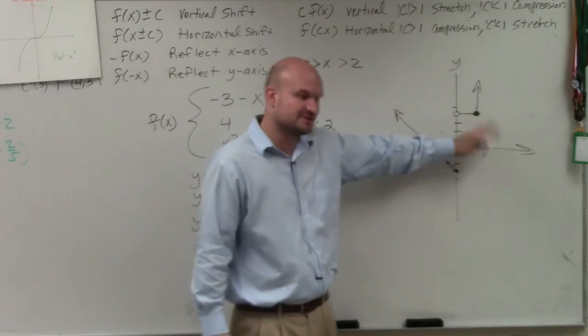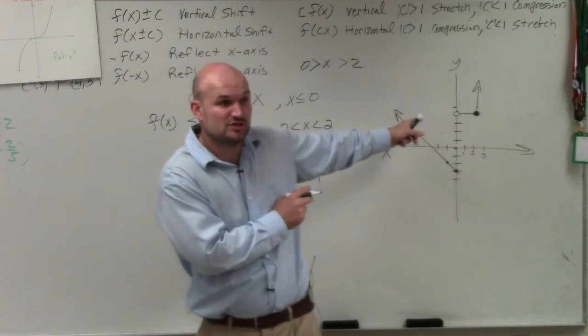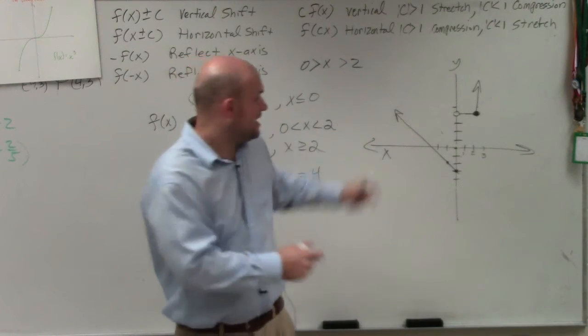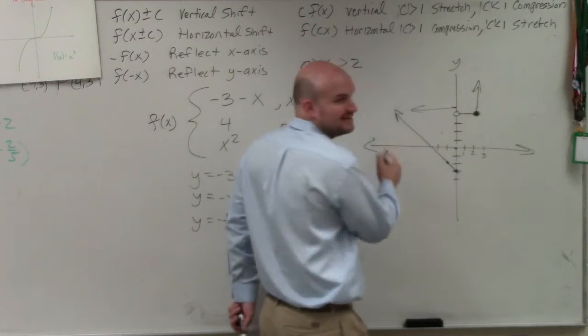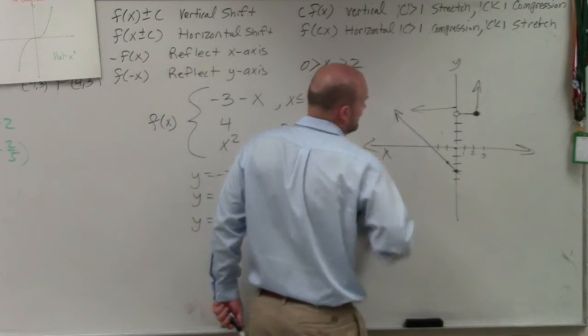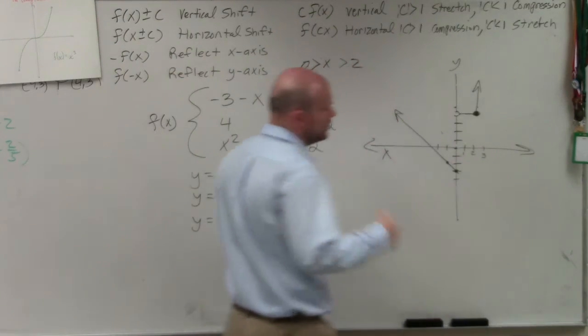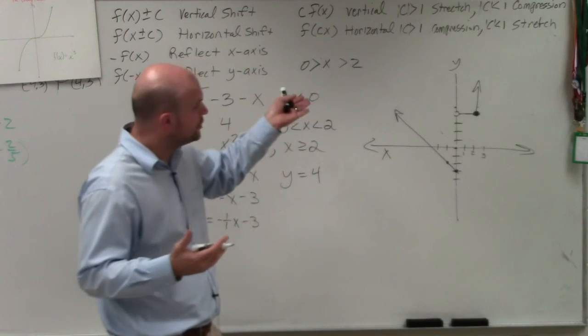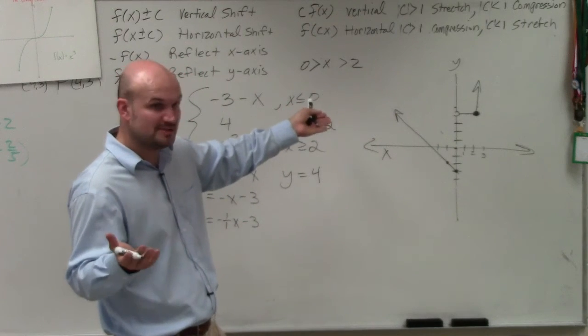Now the important thing is the reason why these constraints work is: is this a function? Does this function pass the vertical line test? Yes. Right? But if you had a line going like that, it wouldn't pass the vertical line test. It's no longer a function. Correct? So that's why it's kind of important, making sure that you're eliminating those constraints. Because those constraints allow us to produce a function. But it's just a piecewise function.